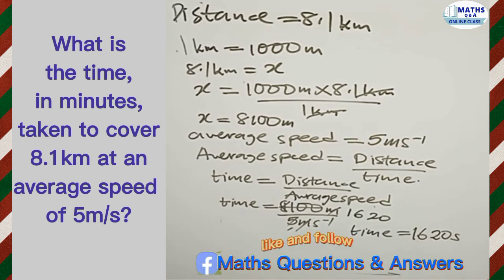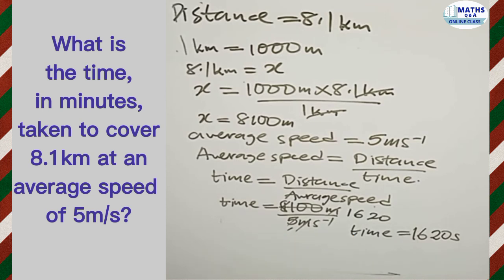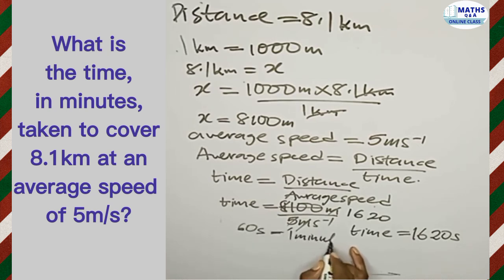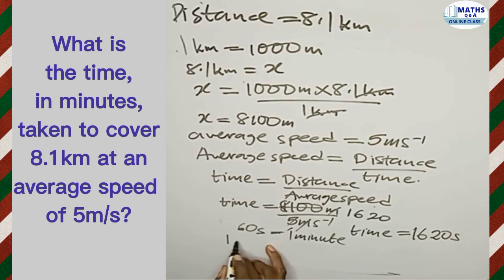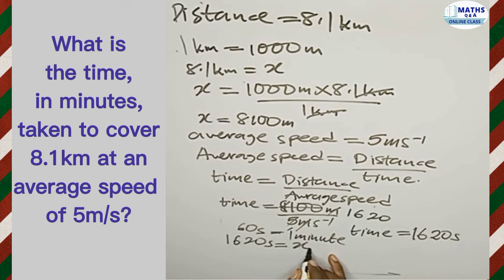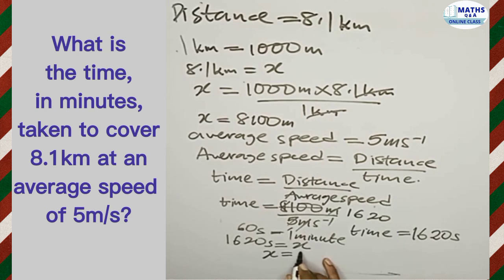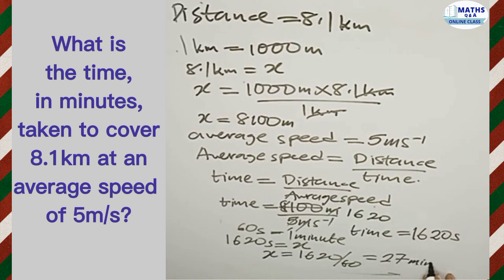But from the question, we are asked to find the time in minutes. Sixty seconds is equal to one minute, so if sixty seconds equals one minute, what will one thousand six hundred and twenty seconds equal? We find x equals one thousand six hundred and twenty divided by sixty, and that gives us twenty-seven minutes.